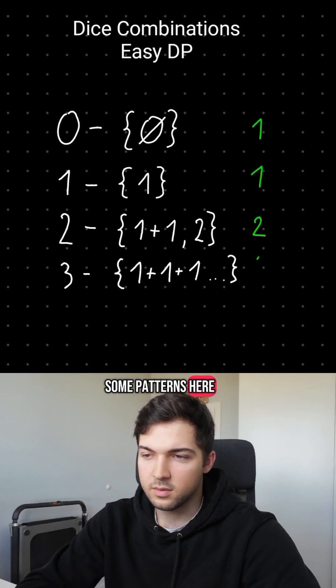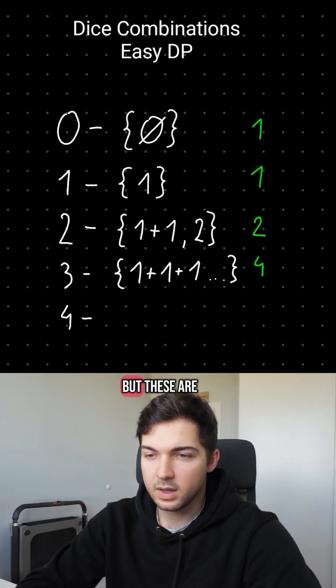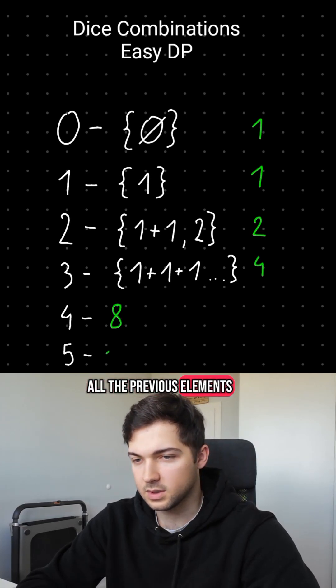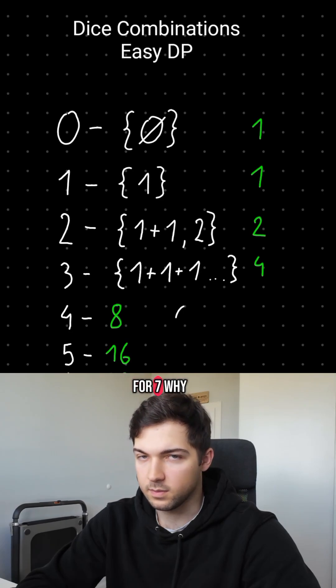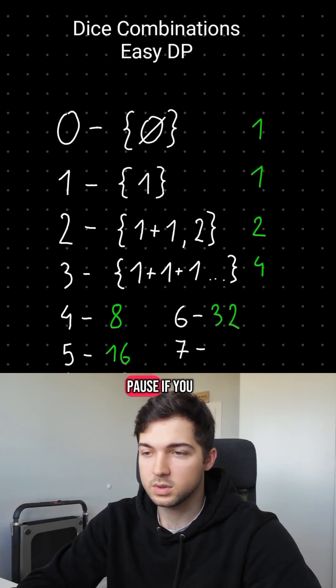You might see some patterns here, for example powers of 2, but these are just sums of all the previous elements. But it breaks for 7. Why? Pause if you want to think some more.